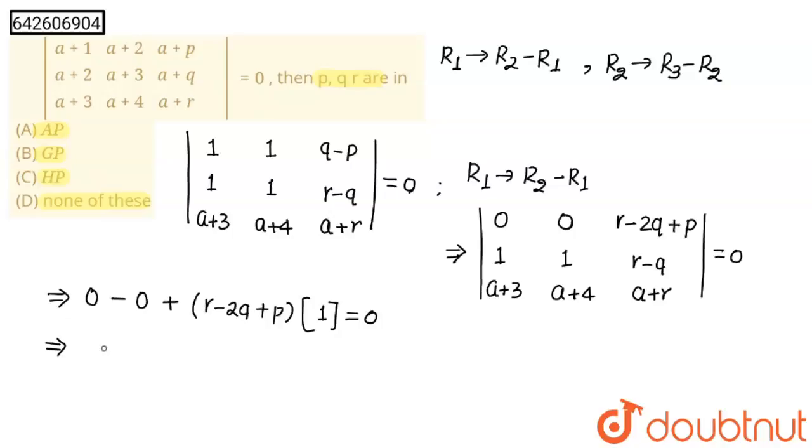Now here, this will become r plus p is equals to 2q, which means that p, q, r are in AP.